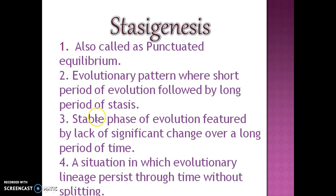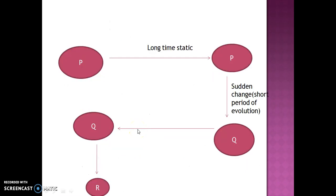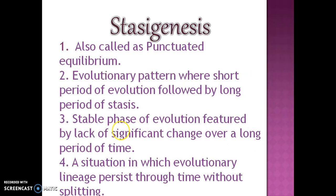Stasis is the stable phase of evolution which is characterized by lack of significant change over a long period of time. It is a situation in which an evolutionary lineage persists through time without splitting. Without splitting, that is the main feature.